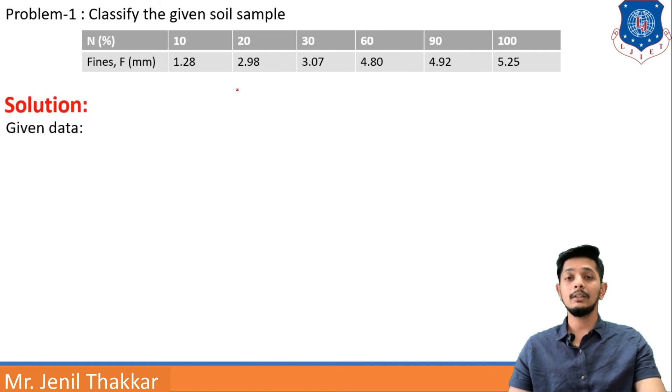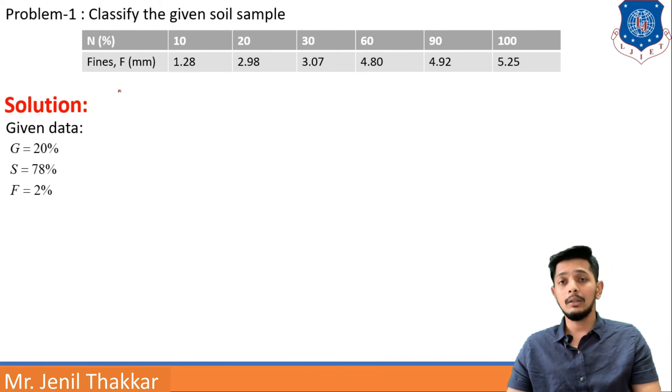Let us write solution of this by writing given data. Here furthermore 3 things are given in the problem only. So now G is 20 percent, S is 78 percent, and F is 2 percent. Now what are these? G is gravel, S is sand and F is fines. So gravels are 20 percent.